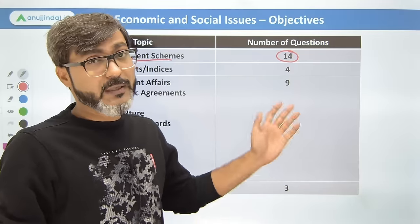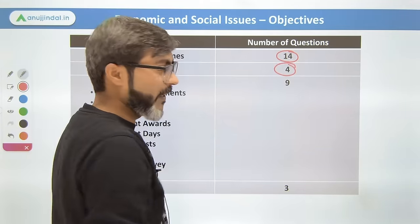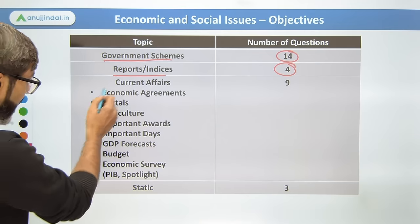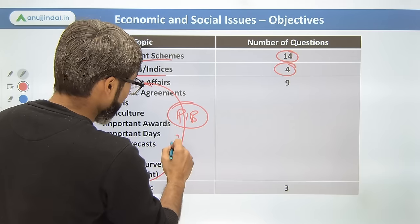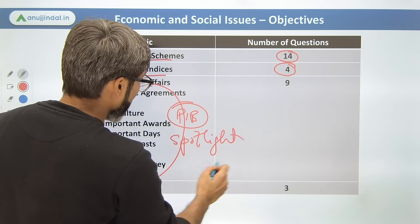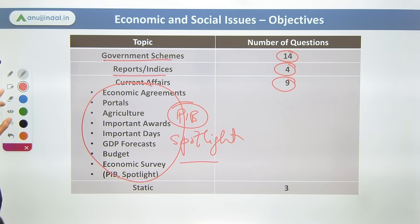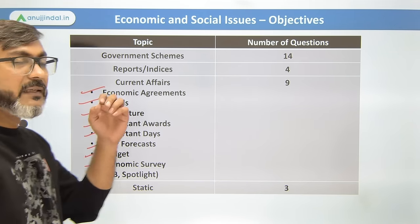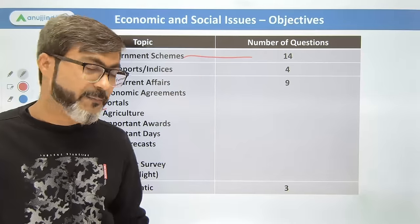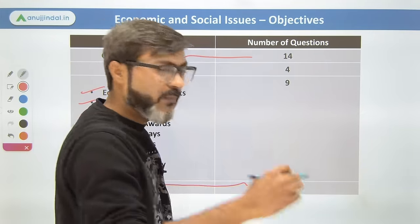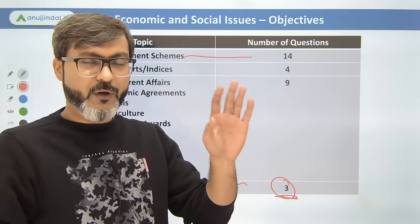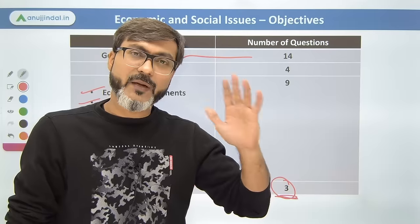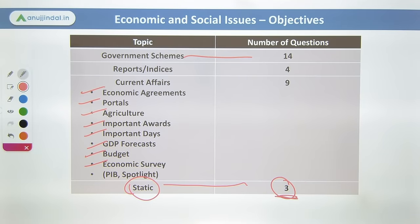Out of 30 questions, there were 14 questions from government schemes — approximately 50% of the question paper. Reports and indices is also a very important topic; every year three or four questions come in RBI Grade B ESI. Current affairs, which can be covered through PIB and Spotlight, were also asked. Other areas included economic agreements, portals, agriculture, important awards, important days, GDP forecast, budget, and economic survey.